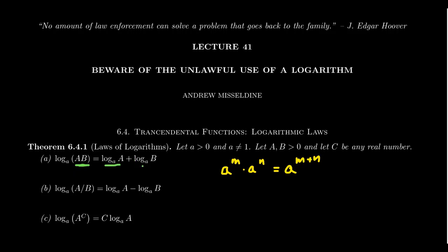Logarithms are exponents. When you look at something like this — what power of little a will give you A times B? You're multiplying and asking what power. The power is going to be the power that gives you capital A plus the power that gives you capital B — you add those together. So when you multiply, add together the exponents. That's what that law of logarithms says, the same law we saw before.